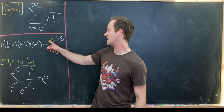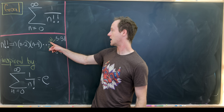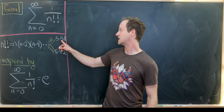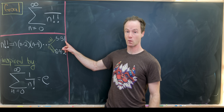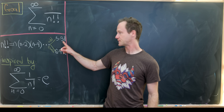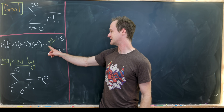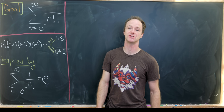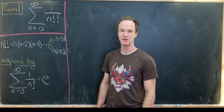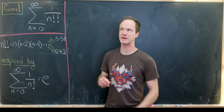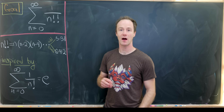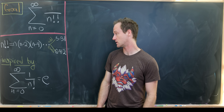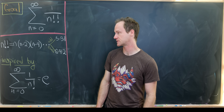And then if n is odd, it will end in 5 times 3 times 1. And if n is even, it'll end in 6 times 4 times 2. So there are a little bit of different properties between the even and odd double factorials.